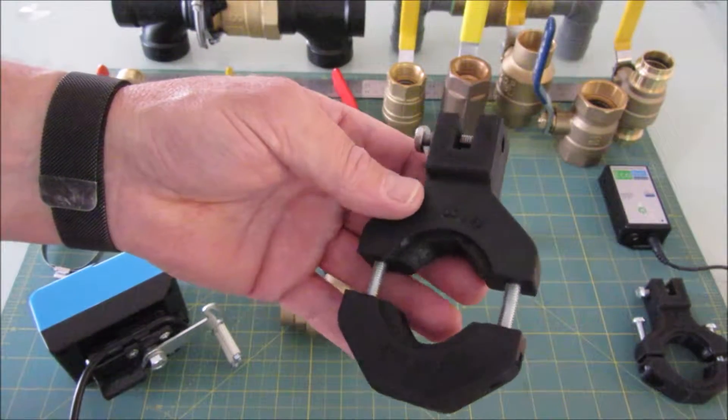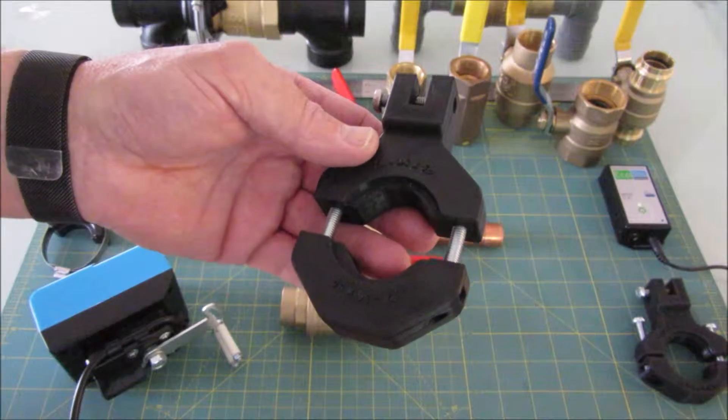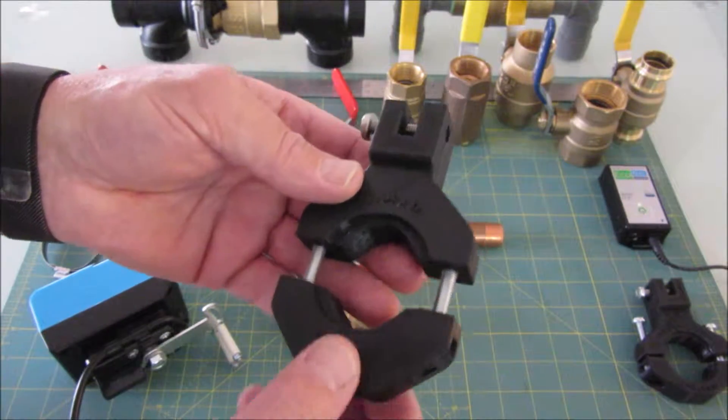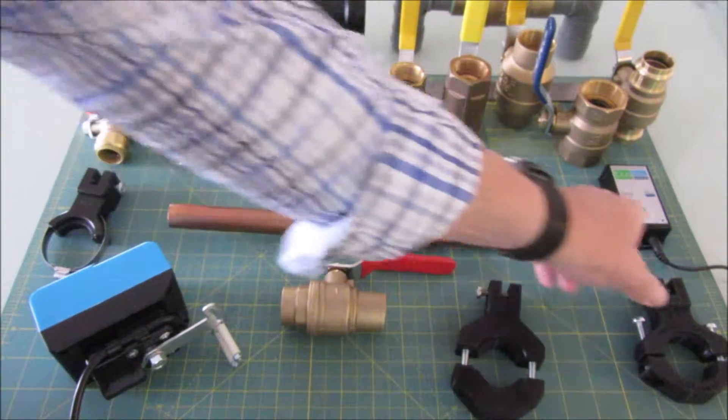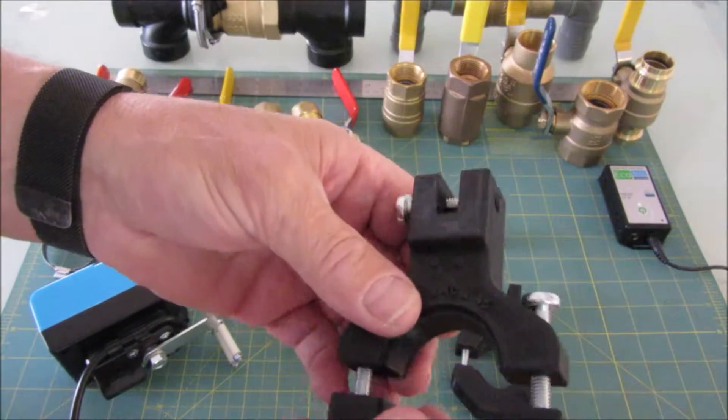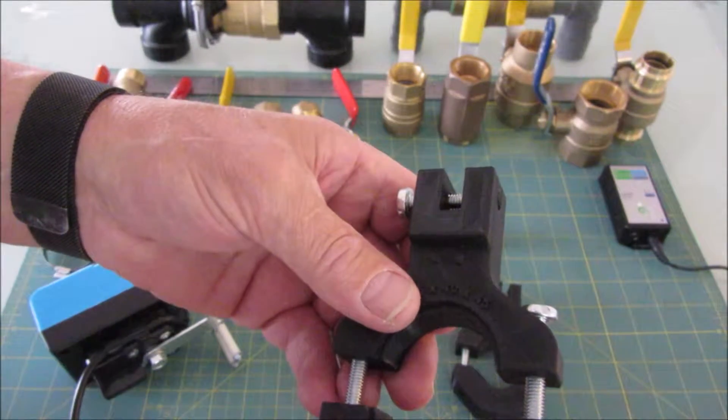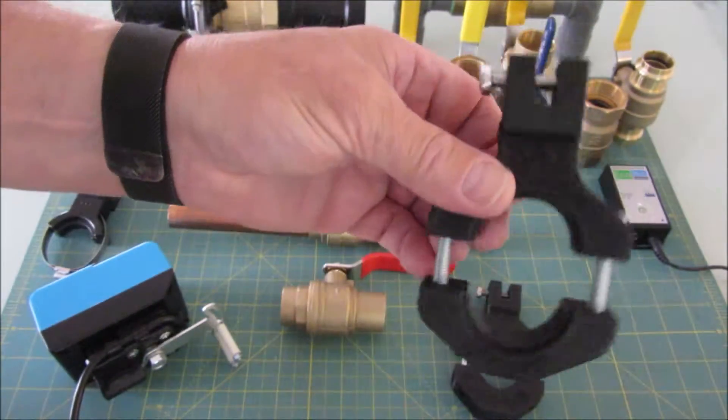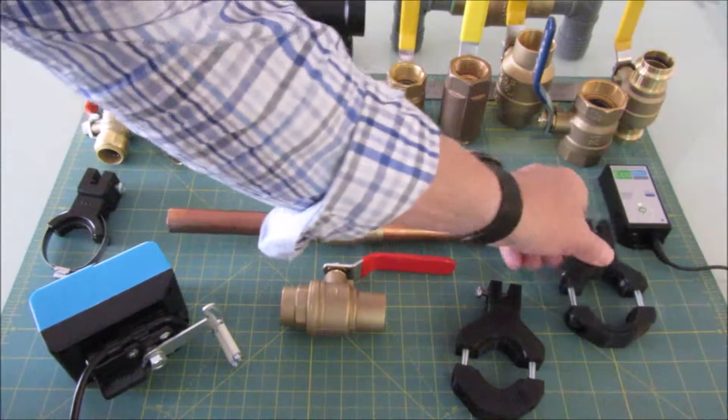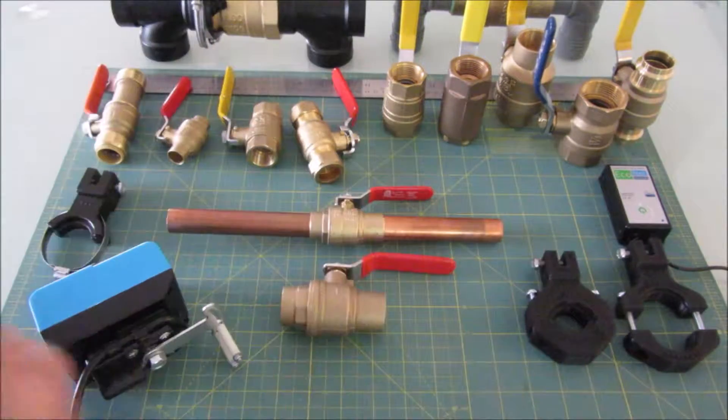One for what we call large valves, which are three quarter to one inch, and a second slightly larger bracket that will go to three quarter threaded up to one and a half inch threaded. So that's the two bracket types.